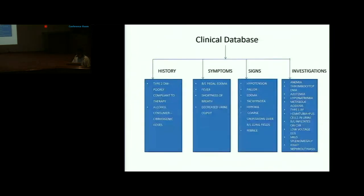Clinical summary: background of Type 2 DM poorly compliant to therapy, alcohol consumer at cirrhogenic doses, with fever, shortness of breath, and decreased urine output. Signs included hypotension, pallor, edema, tachypnea, hypoxia, bilateral coarse crepitations, and febrile status. Investigations showed anemia with thrombocytopenia, azotemia, hyponatremia, metabolic acidosis, Type 1 respiratory failure, pyuria and hematuria, bilateral infiltrates on chest X-ray, low-voltage ECG, splenomegaly, and nephrolithiasis.